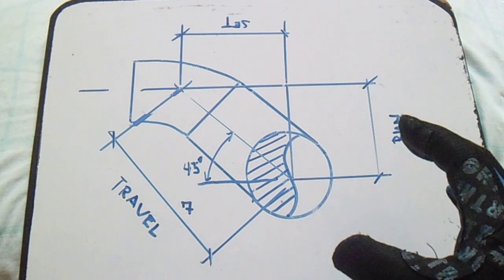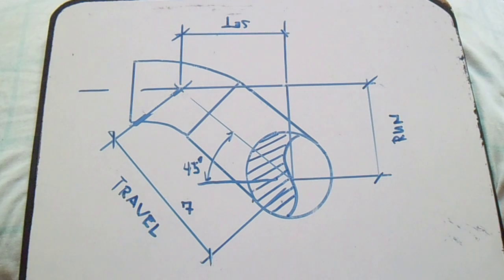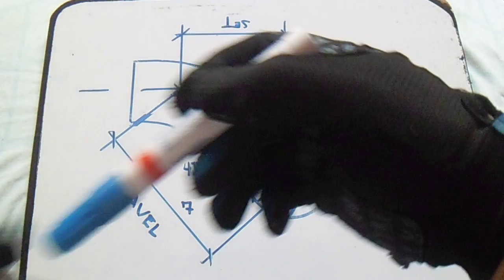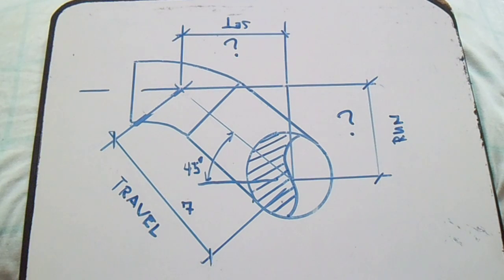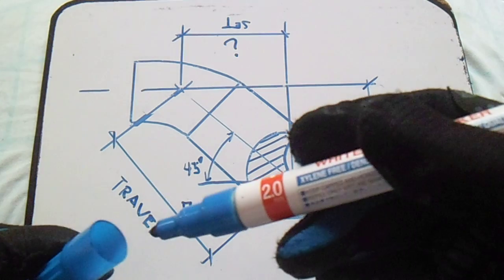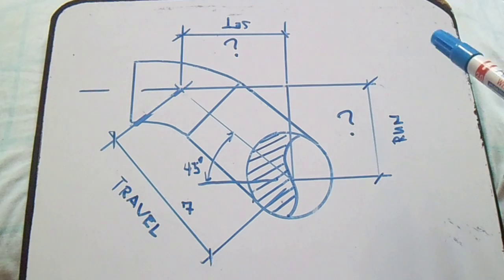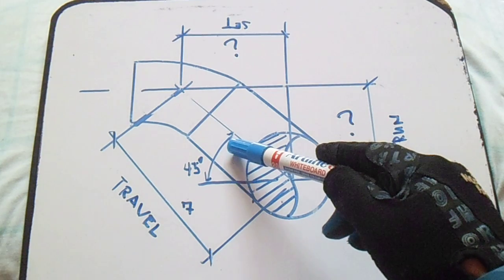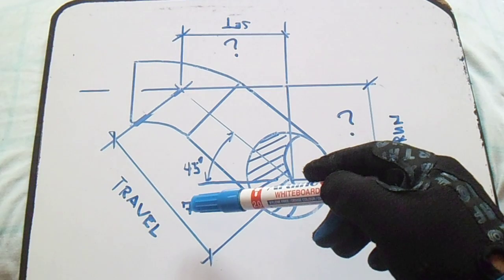By the way, I have a drawing here. This drawing is from my video last day, and this is my question and answer. My question is to find this set and to find this run and how many fittings. This is my final answer. We have a travel, we have a set, and we have a run. We have a given angle of 45 degrees and we have a given travel of 7.